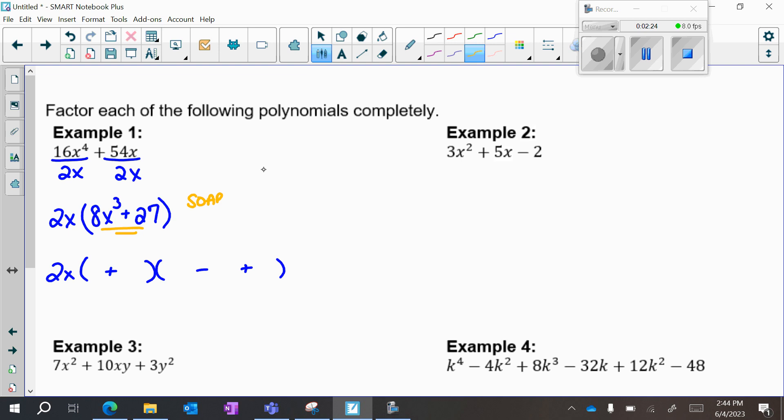If you need to show work on the side, the cube root of 8x to the third is 2x, and the cube root of 27 is 3. So those are the pieces I'm working with. Those cube roots go in the first parentheses, so 2x plus 3, then 2x squared is 4x squared, which goes in the next spot. The product of them, 2x times 3, 6x goes in the next spot, and 3 squared is 9, which goes in the last spot. So this is my polynomial factored completely for example 1.